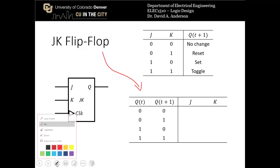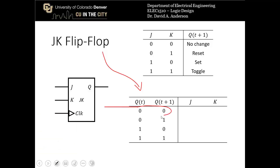If Q(T) and Q(T+1) are both 0, there are two sets of J and K inputs that could correspond to that transition: either no change (J and K both 0) or a reset condition. That means the transition from 0 to 0 can be given by J being 0 and K being either 0 or 1 — which means we don't care.